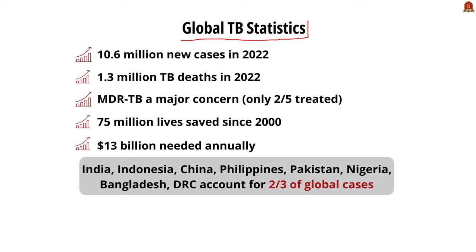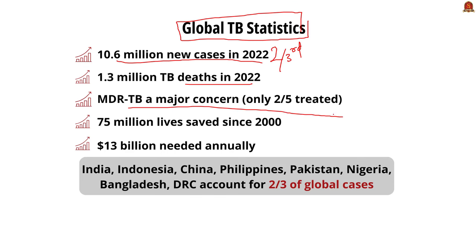Looking at global statistics — you can make a note of these for your mains answer writing. Most importantly, nearly eight countries account for more than two-thirds of global TB cases in 2022. Among them, India is first with 27%.